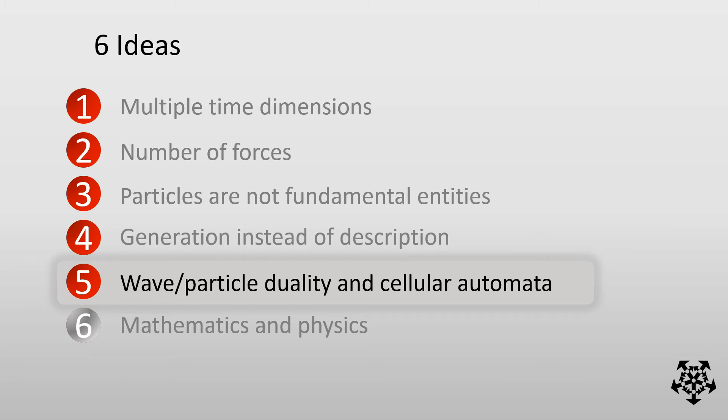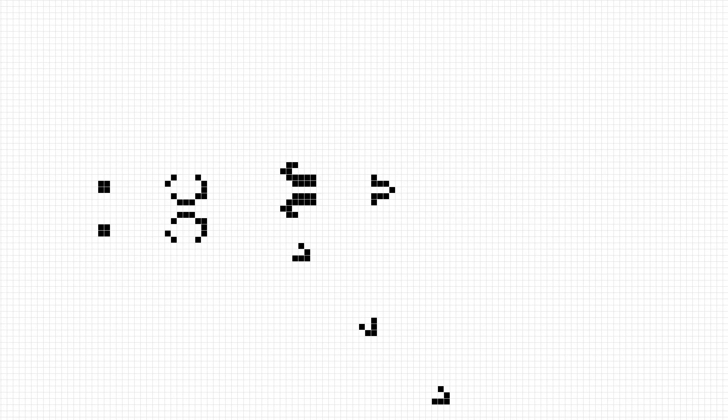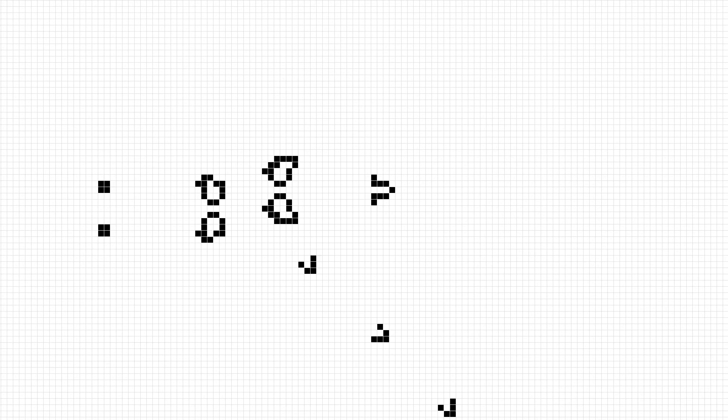Cellular automata are systems of cells arranged in a grid whose states are calculated from the states of their predecessors. With very simple rules they can still show unpredictable and complex behavior. The most famous is Conway's Game of Life, where you can see replicating stable patterns that function as the equivalent of particles — for example a glider gun firing gliders, like a quark firing gluons. But the Game of Life was inspired by biology rather than particle physics.